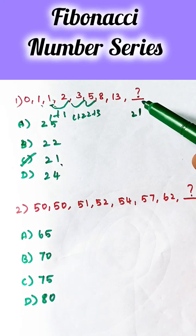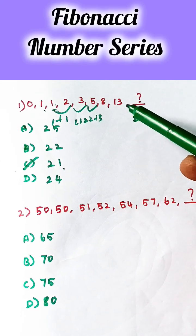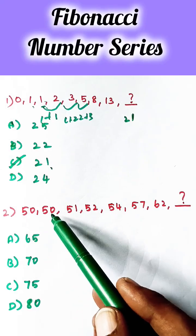The next number is calculated by adding the two numbers before it. Let's see the next problem: 50, 50, 51, 52, 54, 57, 62.